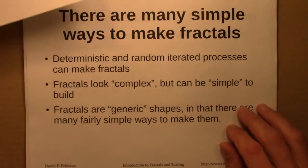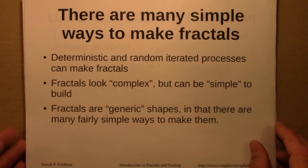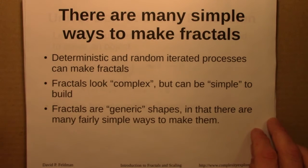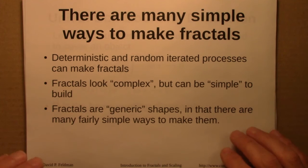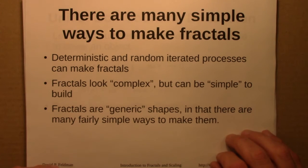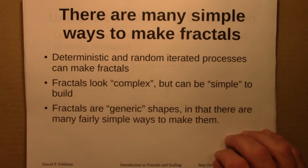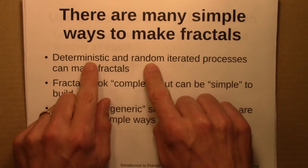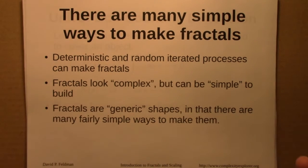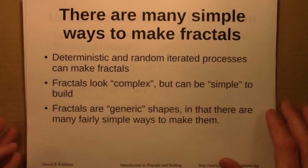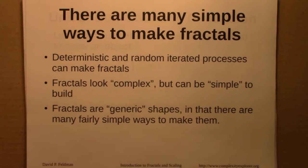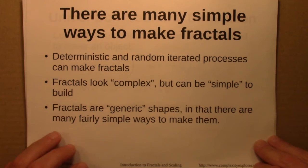The main picture that emerged is that there are many simple ways to make fractals. Fractal shapes may look at first to be quite complicated, but they're actually rather simple to build. Moreover, both deterministic and random iterative processes can make fractals — processes of very different character can produce fractals. So I argued that we can think of fractals as generic shapes, in that there are many different simple ways to make them. Fractals are beautiful and look complicated, but maybe they shouldn't surprise us when we see them.